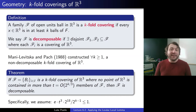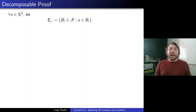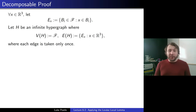So how do we proceed? This seems quite hard — we're given this infinite set of balls covering space, and we have to decompose it into families that cover space. Well, for every x in R³ we let Ex be the set of balls in F that contain x. Now we translate this problem into a hypergraph problem. We let H be an infinite hypergraph where the vertices are the balls (members of F) and the edges are the Ex — the set of balls containing each point x.